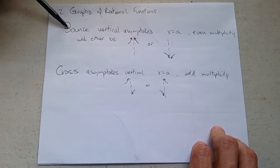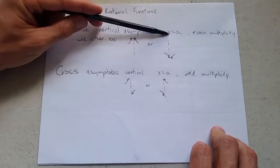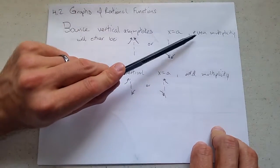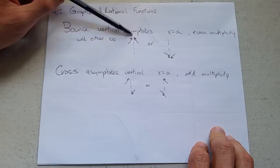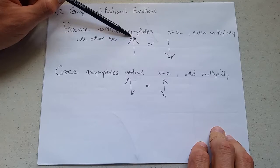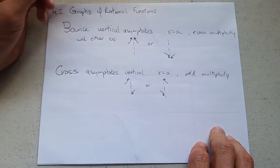So a bounce vertical asymptote, x equals a, you get a bounce when there's even multiplicity. You either bounce like this—I call this bouncing off the ceiling—or you can bounce off the floor.